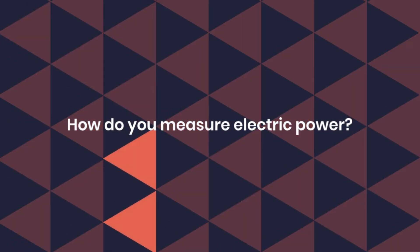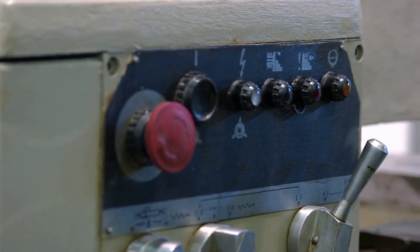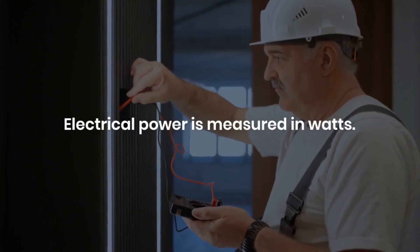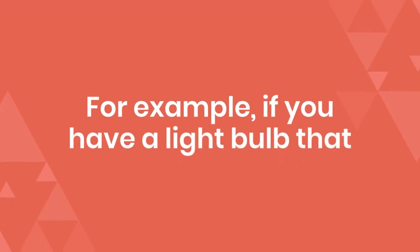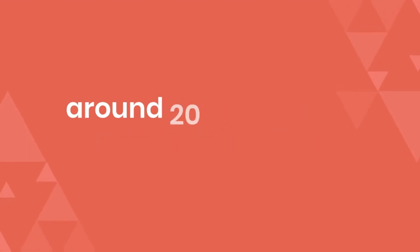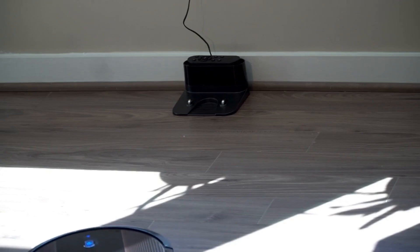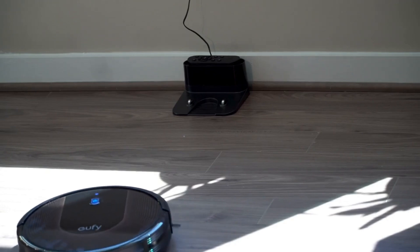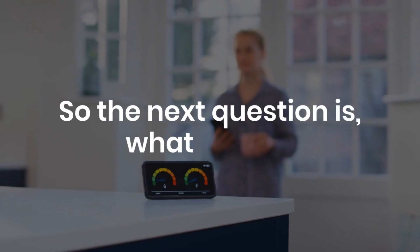What is the unit of electric power and how is it calculated? Electrical power is measured in watts. It is calculated by multiplying voltage by current and the power factor. For example, if you have a light bulb that uses 10 volts and 2 amperes of current, the power consumed will be around 20 watts for a completely resistive load. Knowing how to calculate power helps you understand energy consumption and efficiency.